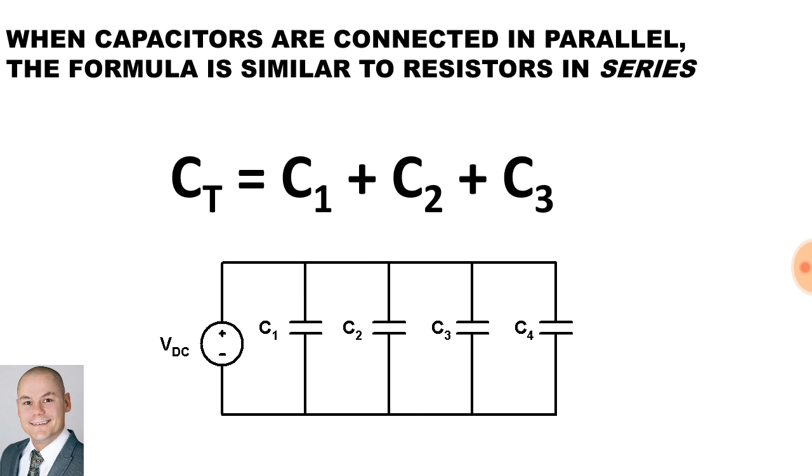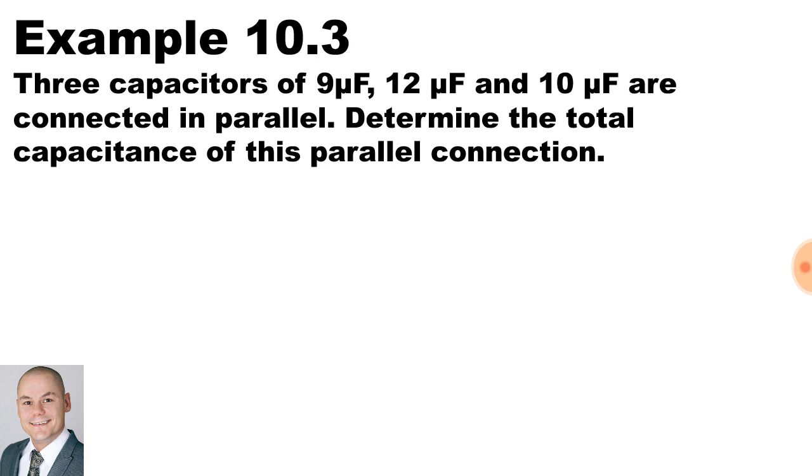All right, some examples of capacitors. When capacitors are connected in parallel, the formula is similar to that of resistors connected in series. So to look at our first example of capacitors, we have three capacitors of nine microfarad, 12 microfarad and 10 microfarad, and they're all connected in parallel. Determine the total capacitance of this parallel connection.